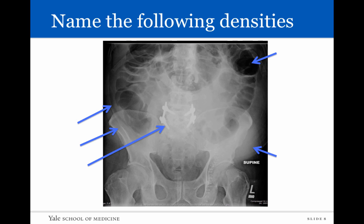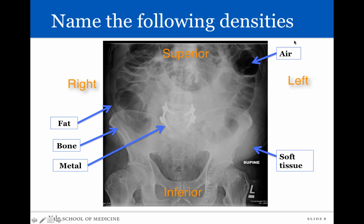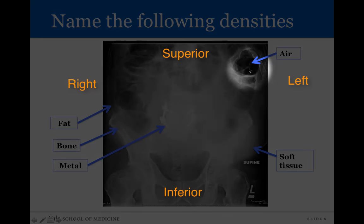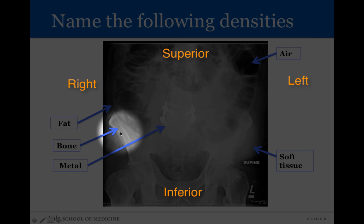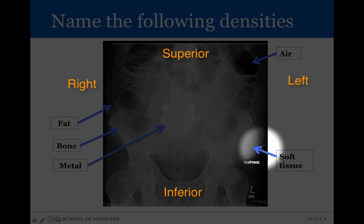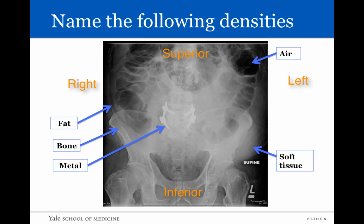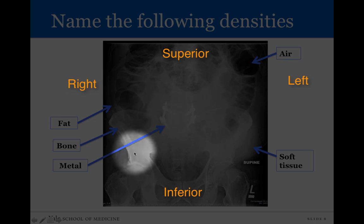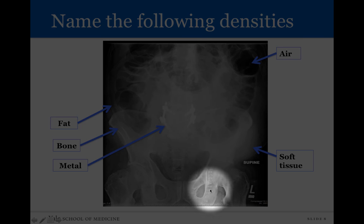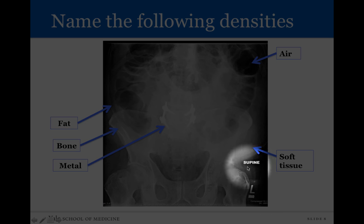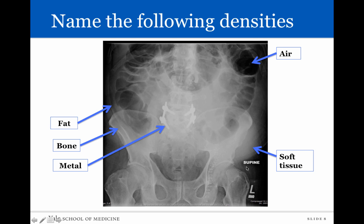Looking at this radiograph of the abdomen — oriented with the head up, feet down, right side here, left side there — see if you can identify the five densities. The darkest area in the left upper quadrant is going to be air. The brightest is going to be metal. Bone is the next brightest, white but not as bright as metal. Soft tissue — including subcutaneous fat, organs, and fluid in the body — will all have a relatively white appearance. Fat will be somewhere between the densities of soft tissue and air, relatively dark but not as dark as air — that little strip over there. There are also surgical clips visible in the left groin area, as well as markers indicating supine and left side showing patient positioning.